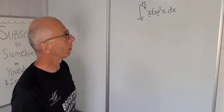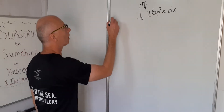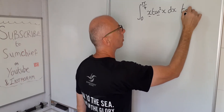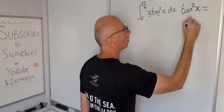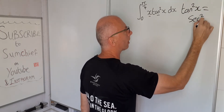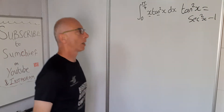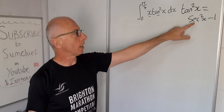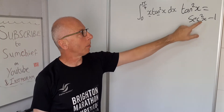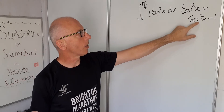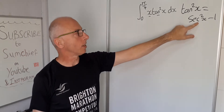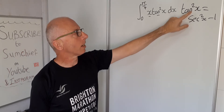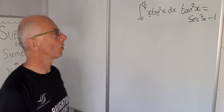We might need to change tangent squared x a little bit. What we do know is that tangent squared x equals secant squared x minus 1. When we come to take the integral in integration by parts, we know the integral of secant squared x is tangent x. Working straight with tangent squared x gives us a few problems.